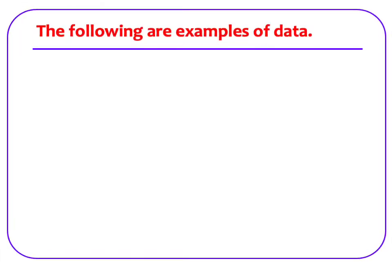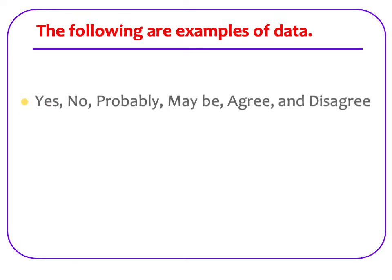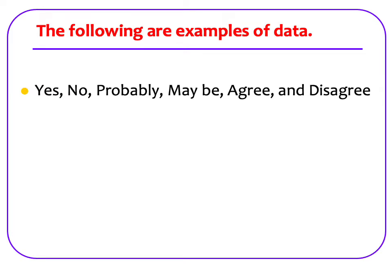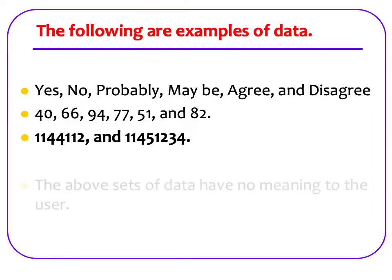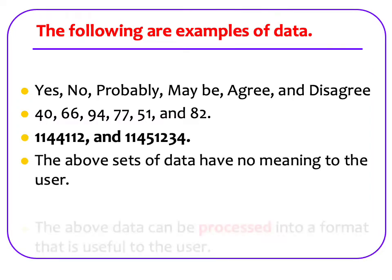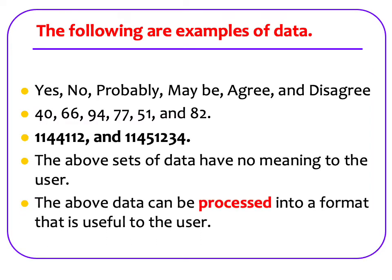The following are examples of data. Yes, no, probably, maybe, agree, and disagree. 40, 66, 94, 77, 51, and 82. 1,144,112, and 11,451,234. The above sets of data have no meaning to the user.